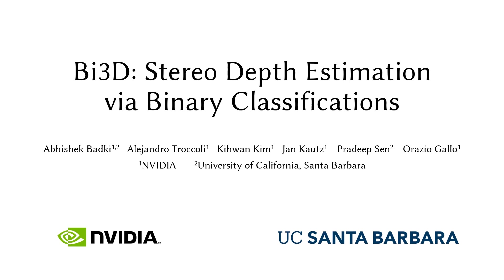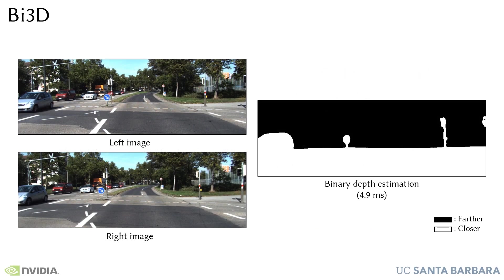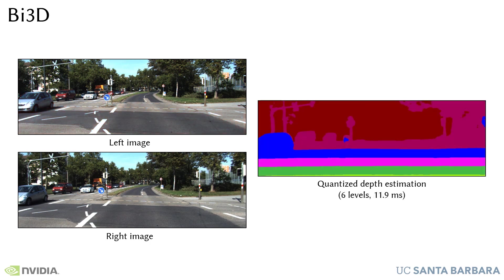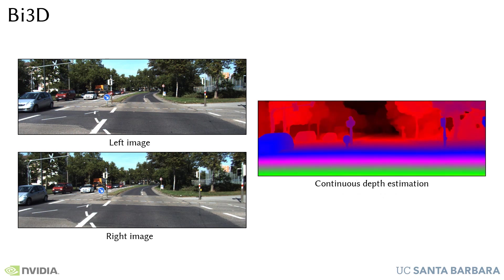We present BI3D, a novel stereo depth estimation approach that allows trading depth accuracy and latency at inference time. Given an input stereo image pair, our method can detect objects that are closer than a given distance in just a few milliseconds. It can also estimate depth with arbitrary quantization and computational complexity linear with the number of quantization levels. With a larger computational budget, it can also produce a traditional depth map achieving competitive results on standard datasets.